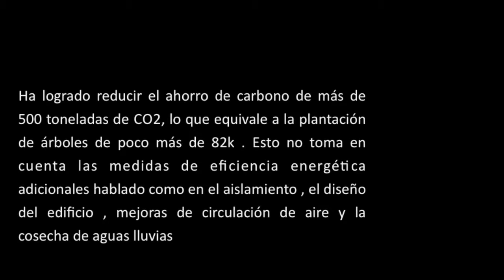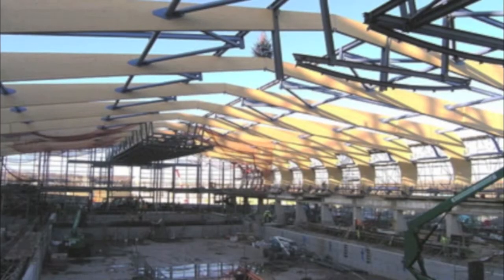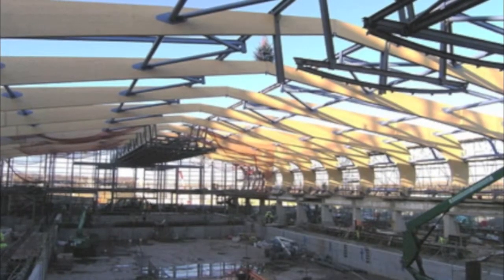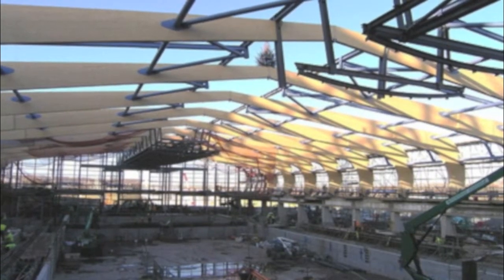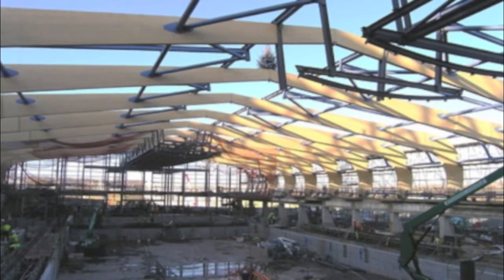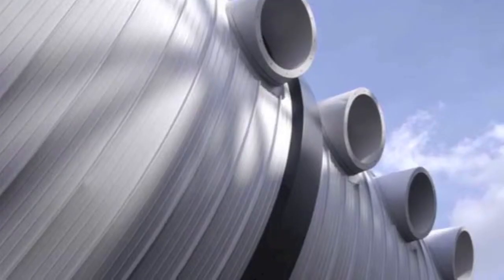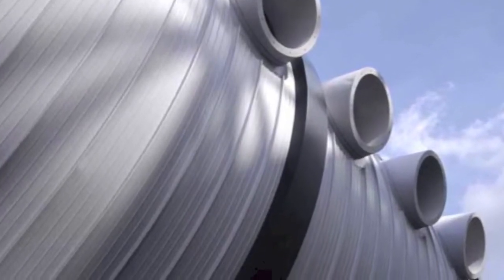Esto no toma en cuenta las medidas de eficiencia energética adicionales, hablando como en el aislamiento, el diseño de edificios, mejoras de circulación de aire o la cosecha de agua de lluvia. Además del ahorro de agua y de energía, la madera para la creación de las vigas se obtuvo de bosques gestionados de Austria y una gama de otros materiales Green Guide son utilizados en el edificio. Desde el diseño del edificio para los materiales y fuentes de energía, todas estas entradas aseguran que el centro acuático deja un legado de sostenibilidad en el ámbito local.